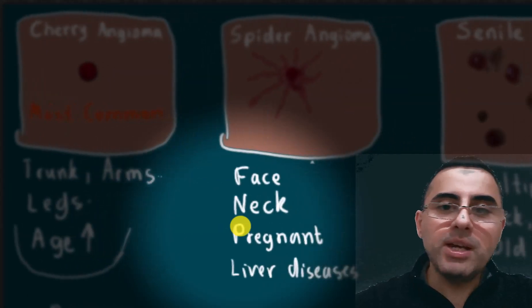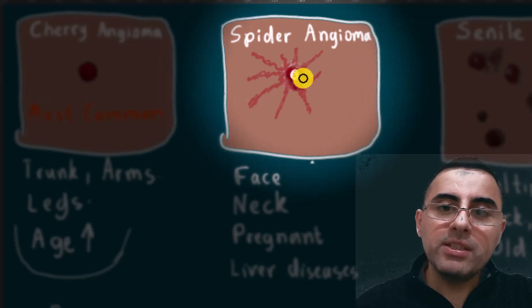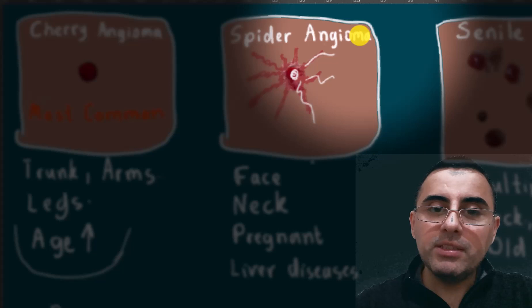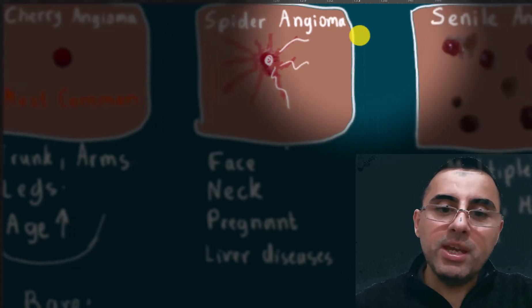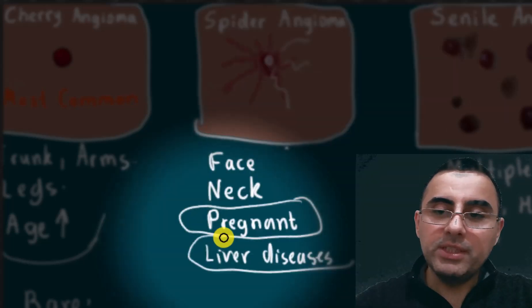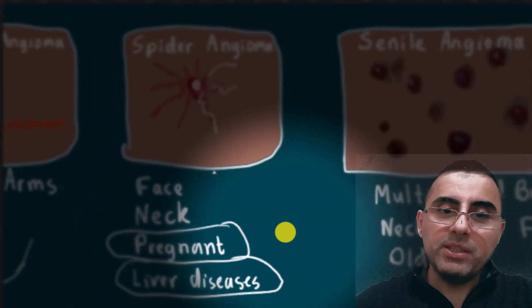Spider angioma looks like cherry angioma but has a center with spider legs. Because of this spider appearance, it's called spider angioma. It commonly occurs on face and neck. It's very common among pregnant women and persons who have liver disease, but any person can also have spider angioma.